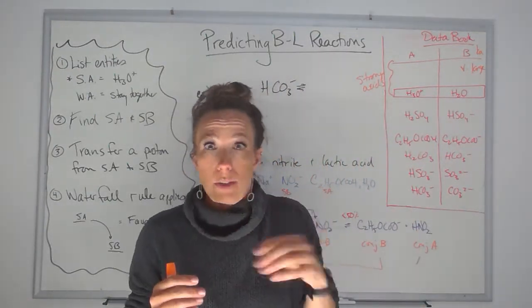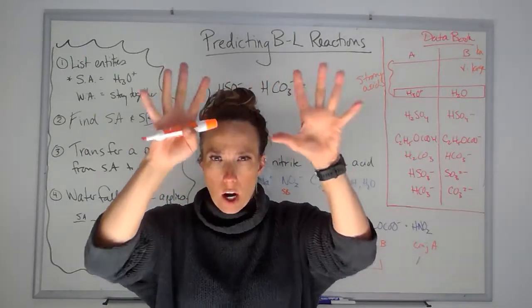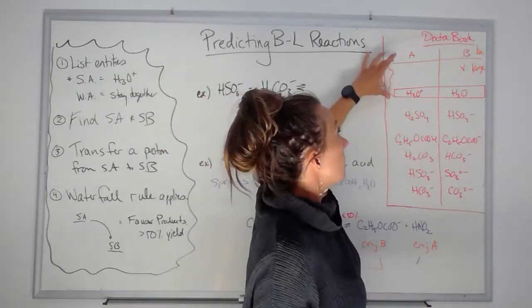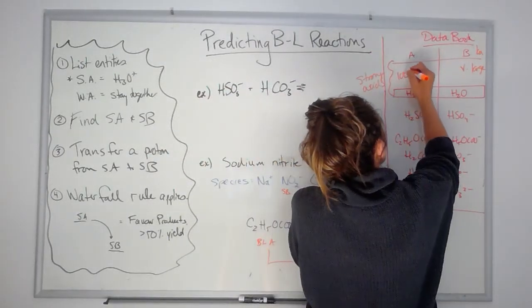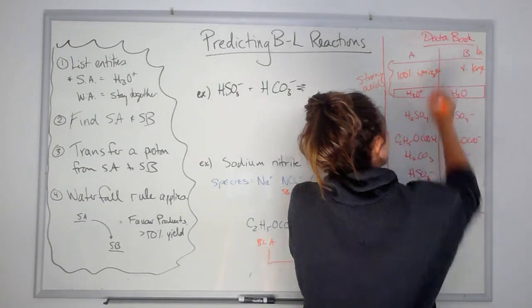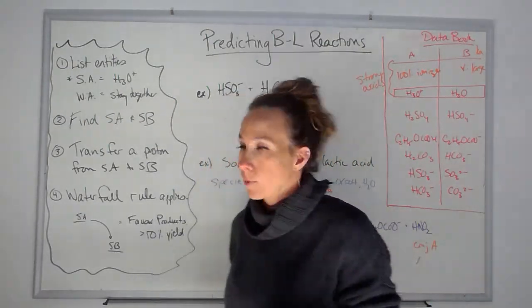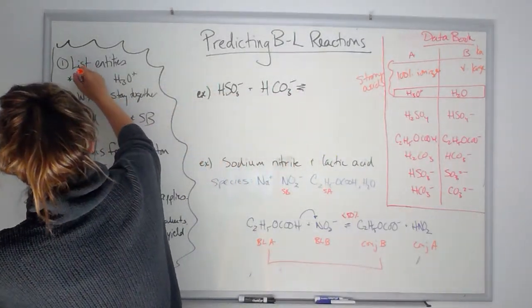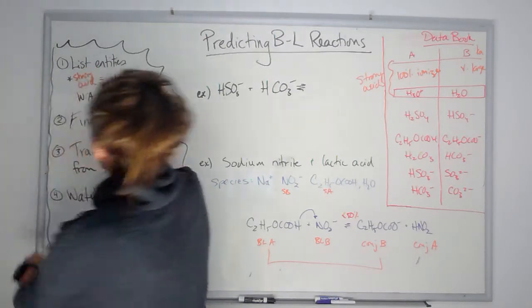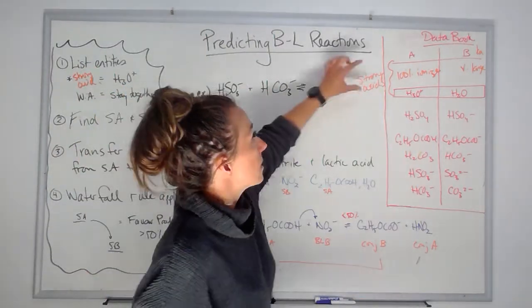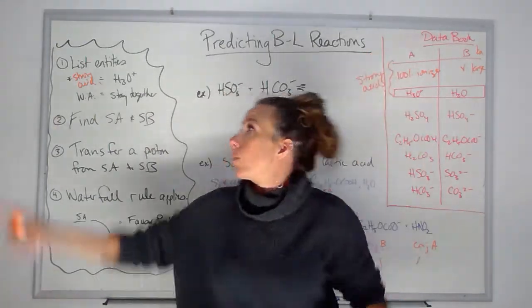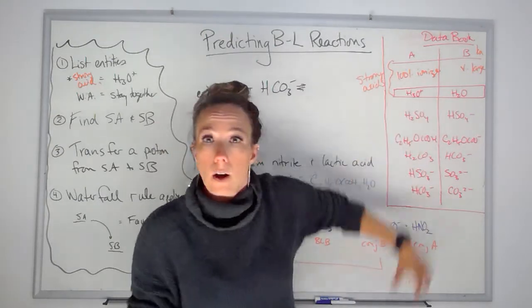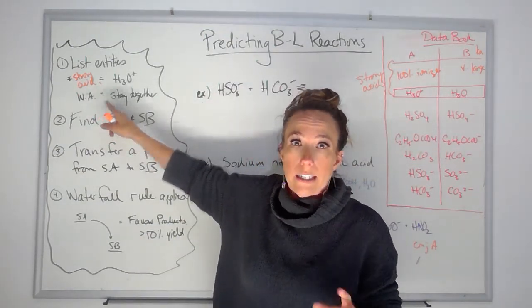The Ka value is way greater than one, so my products are much bigger than my reactants — I don't have an equilibrium, I have 100% yield here. So these are my strong acids; they 100% ionize, just like in Chem 20. So when I said if you have a strong acid, write down H3O+, that means if one of these is in the word problem, you write down H3O+. If any of the others are in your word problem, they're weak acids and they stay together.